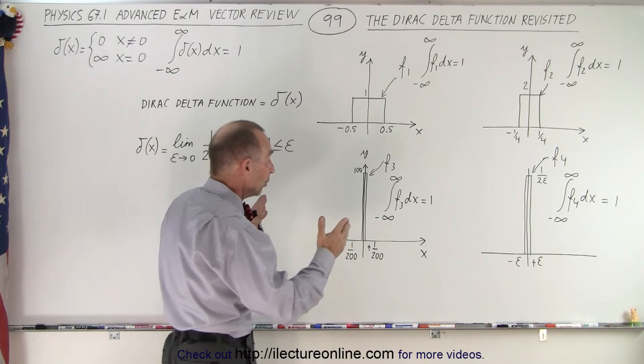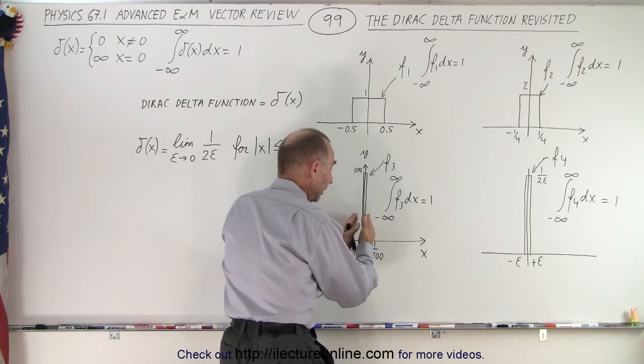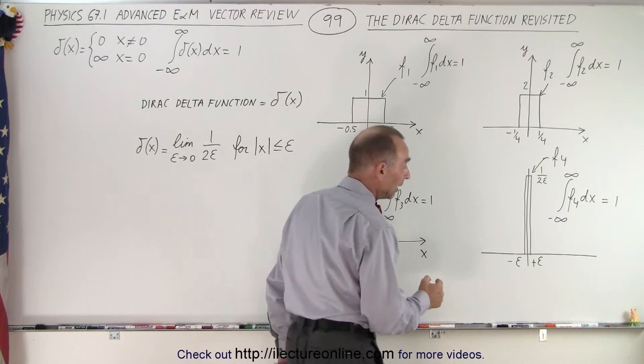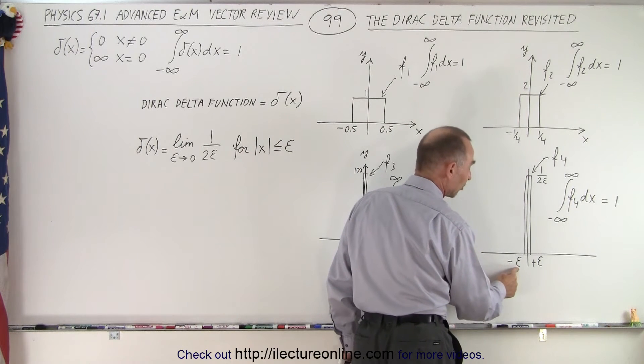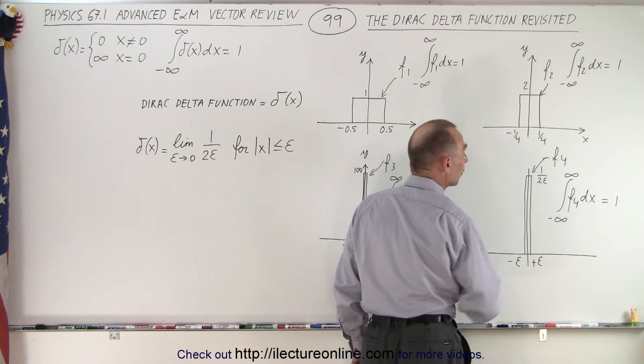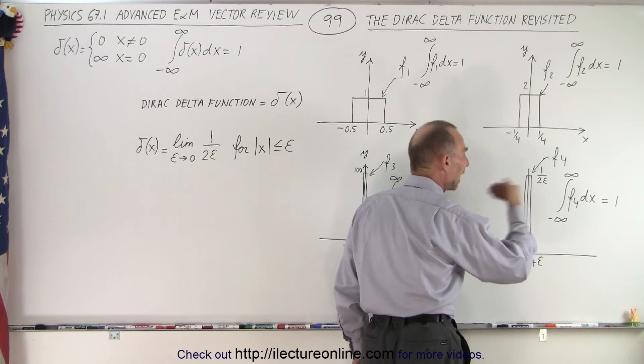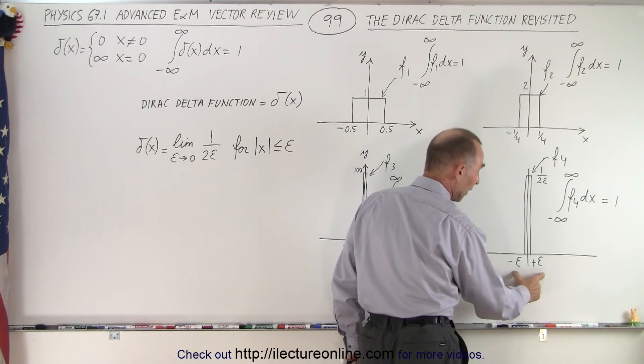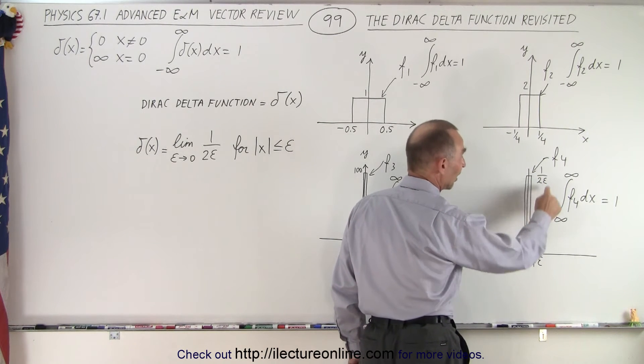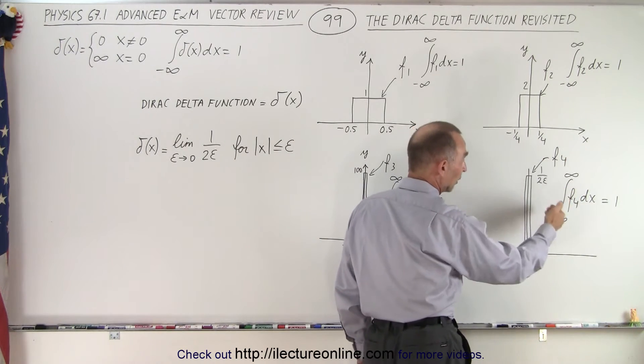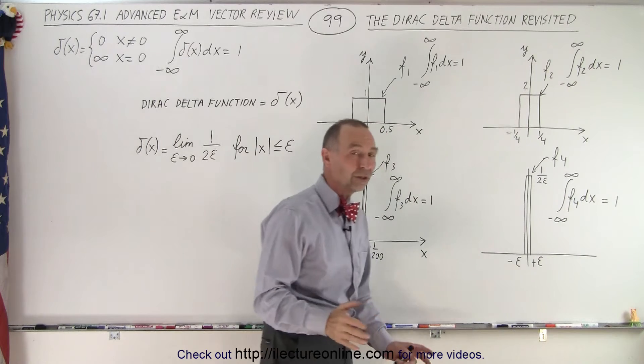So what is the Dirac delta function? We keep on making it less wide, skinnier. We keep on making it taller in such a way that we now integrate from minus epsilon to plus epsilon, all the way to 1 over 2 times epsilon. The area of this will equal 1. It doesn't matter what these values are as long as the height is equal to this. Let's call it function 4, we integrate over the function, we still get 1.